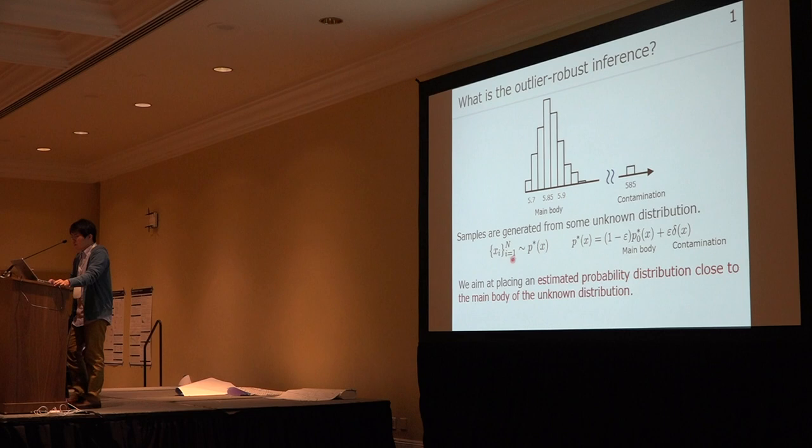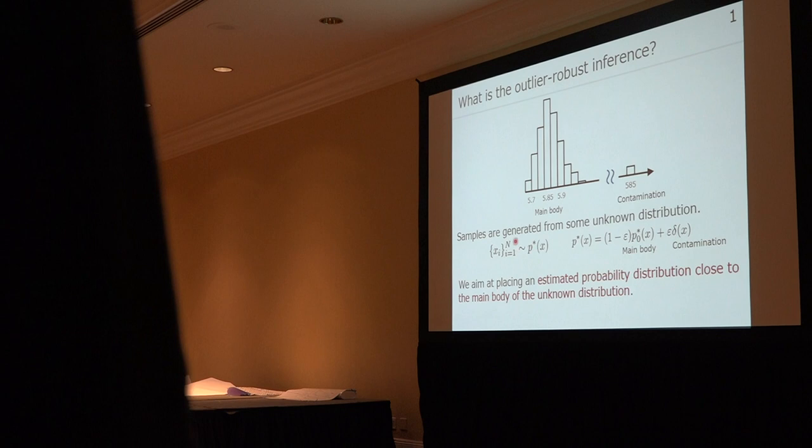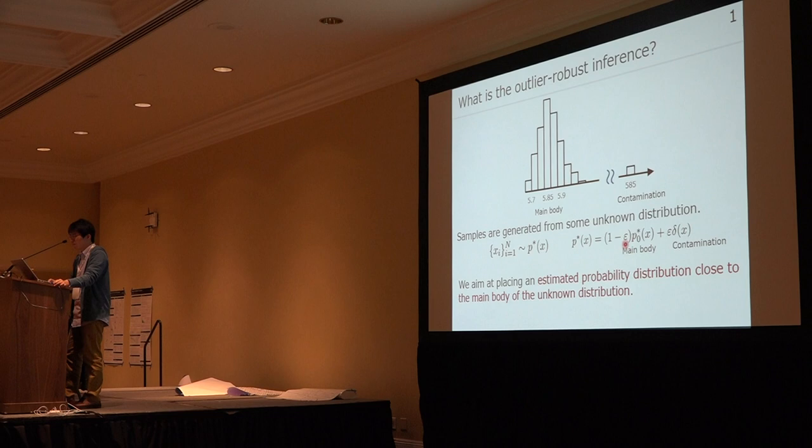More formally, we consider the situation that independent samples x1 to n are generated from some unknown distribution d-star of x. This d-star x consists of two parts: one is the main body of the data, and the other is the contamination. In outlier robust inference, we want the estimated probability distribution to be close to the main body of the unknown distribution.